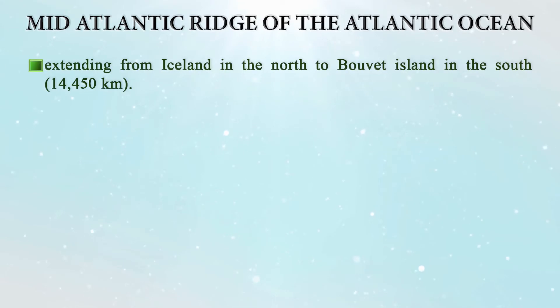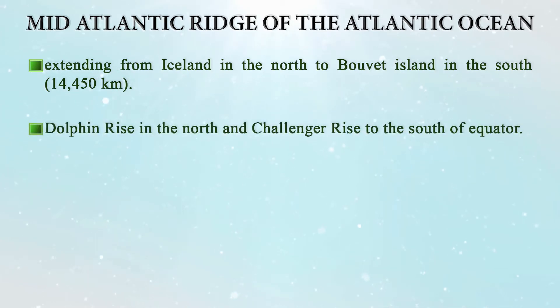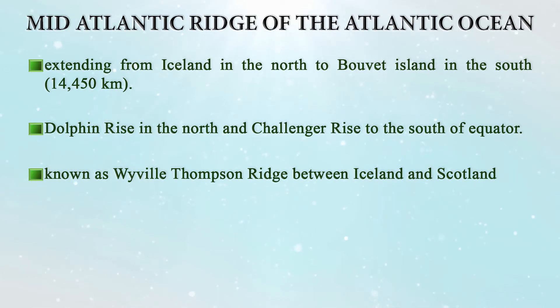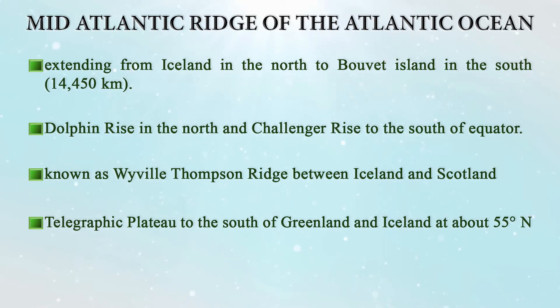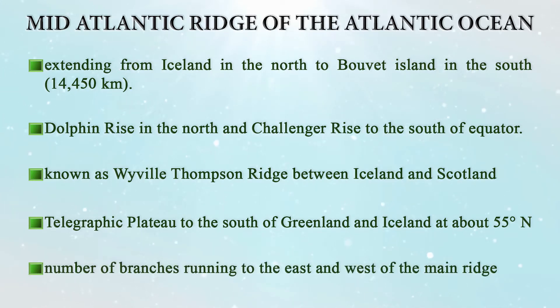Now coming to the mid-oceanic ridge of the Atlantic Ocean, one of its most important features. It extends from Iceland in the north to Bouvet Island in the south, covering a total length of about 14,450 kilometers. It is known as the Dolphin Rise in the north and Challenger Rise to the south of the equator. It is also known as the Wyville Thomson Ridge between Iceland and Scotland, and the Telegraphic Plateau to the south of Greenland and Iceland at about 55 degrees north latitude, because the first telegraphic cables were laid there. There are a number of branch ridges running from this mid-oceanic ridge east and west, dividing the Atlantic into several basins.